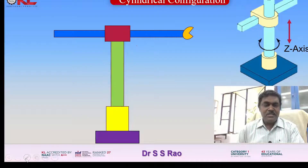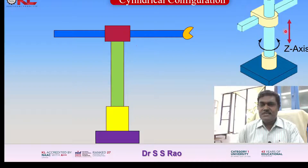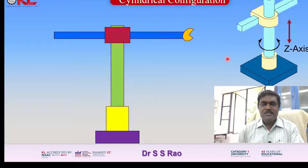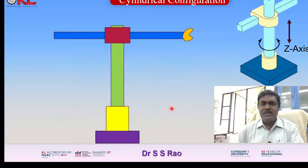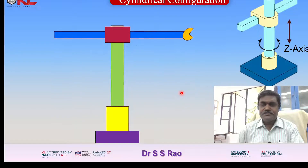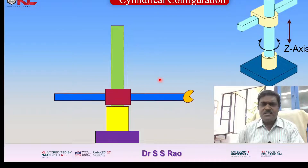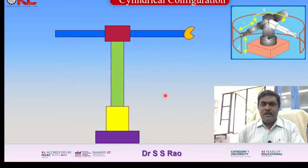Now look at these diagrams. Let me select the laser pointer for easy understanding. You can see this is the z-axis — the entire setup will move in the vertical up and down direction. You can see how this manipulator moves up and down; it controls the height of the cylinder. This is the first translatory motion of the manipulator.